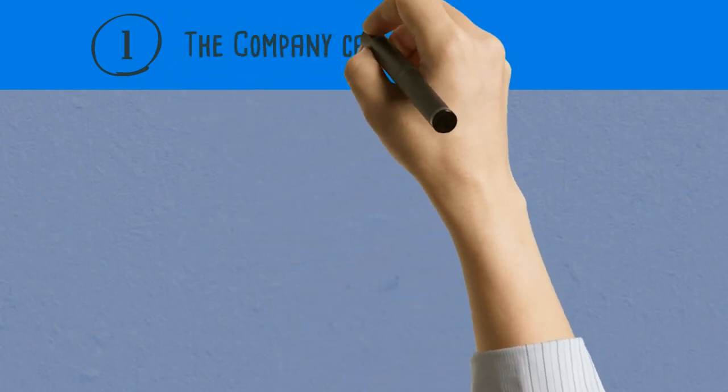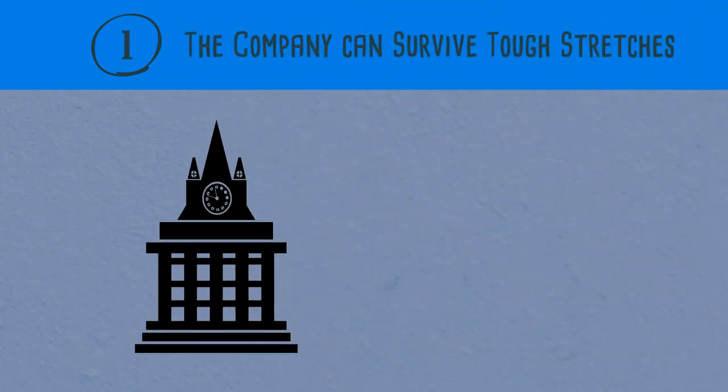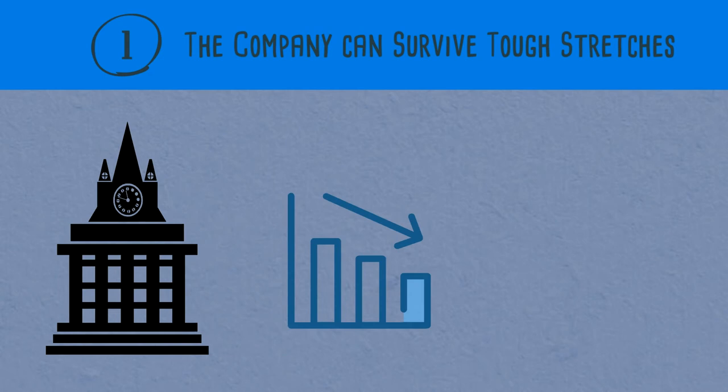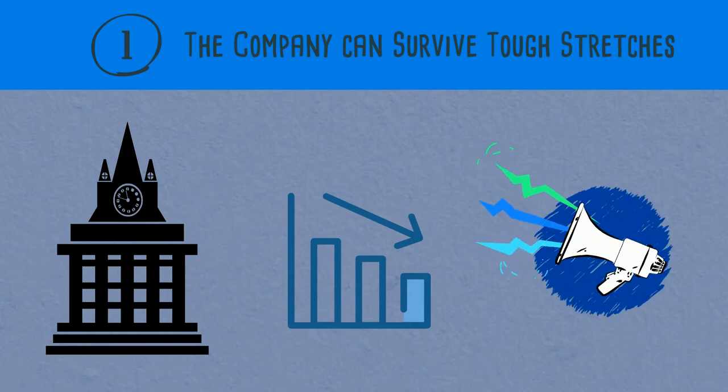Number 1: The Company Can Survive Tough Stretches. The company has the ability to survive economic turmoil. Changes in the economy are inevitable and they don't announce when they want to hit hard.